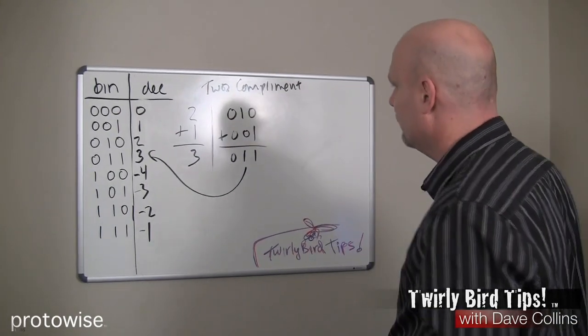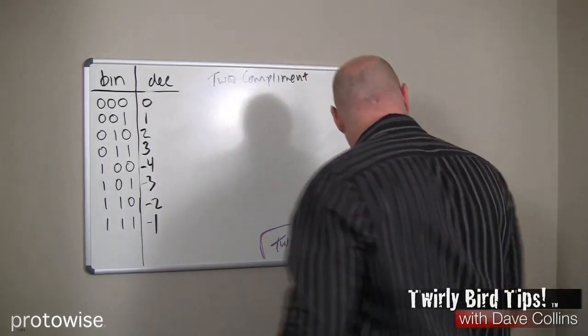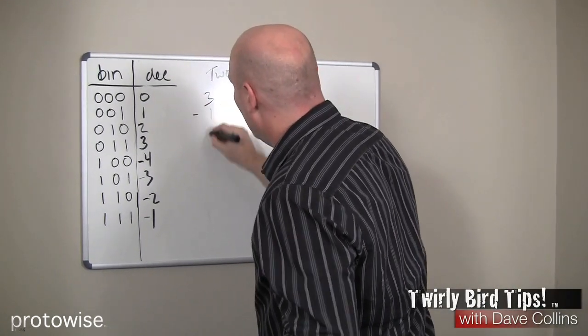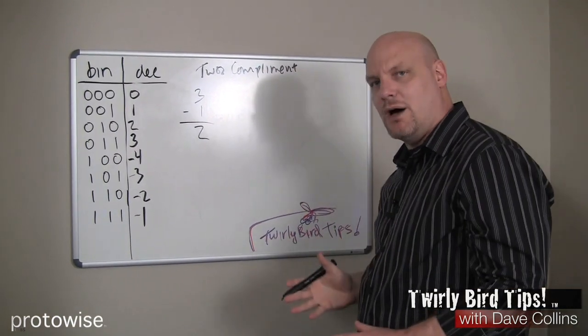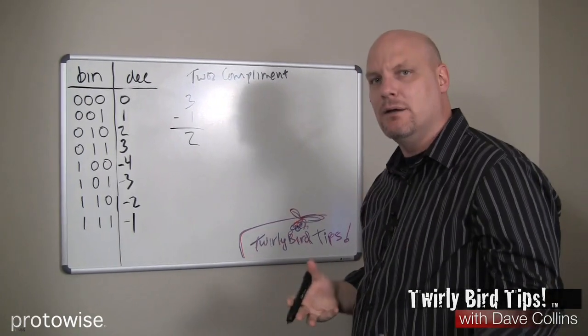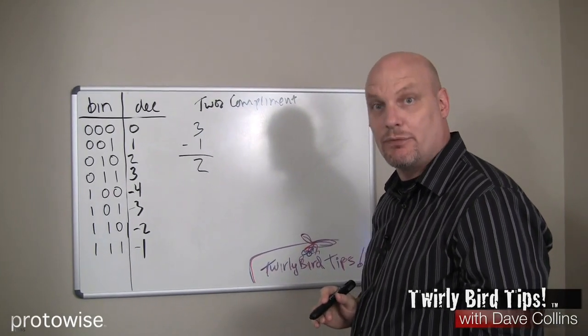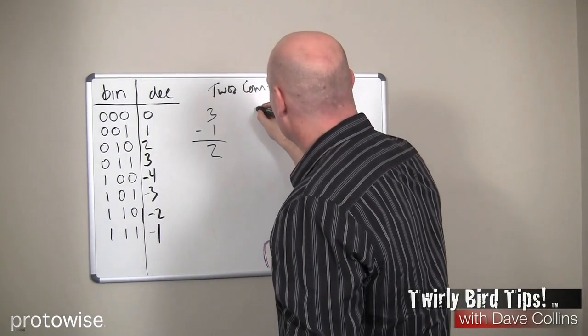Let's see if we can do something a little bit more exciting than that. Not much more, but a little more. Let's try a simple subtraction problem. Let's say 3 minus 1. We know that 3 minus 1 is 2. But in two's complement, we can simply add the representation of negative 1 to the representation of 3.